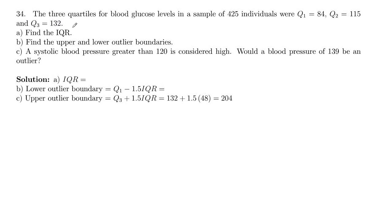In problem 34, we're given that the three quartiles for blood glucose levels in a sample of 425 individuals were Q1 equals 84, Q2, the median, 115, and Q3, 132.